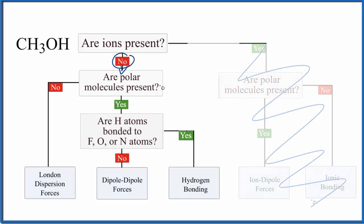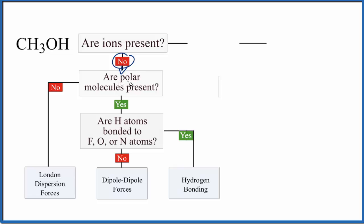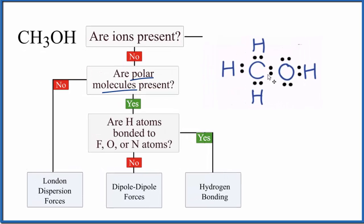Next we need to figure out if there are any polar molecules present. So is methanol a polar molecule? Let's take a look at the Lewis structure here. Since it's an asymmetrical molecule and we have this oxygen which is very electronegative attached to the carbon here, it's probably going to be a polar molecule. Let's take a look at this in three dimensions so we can really see that.